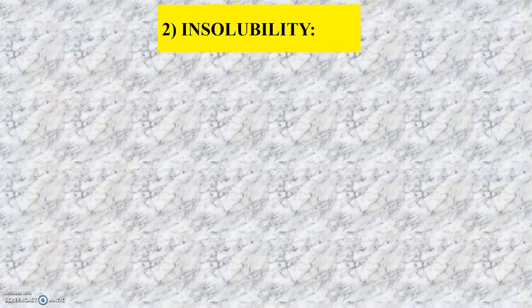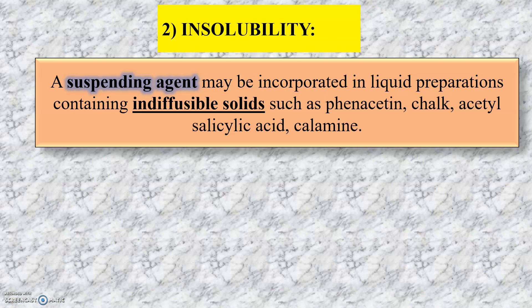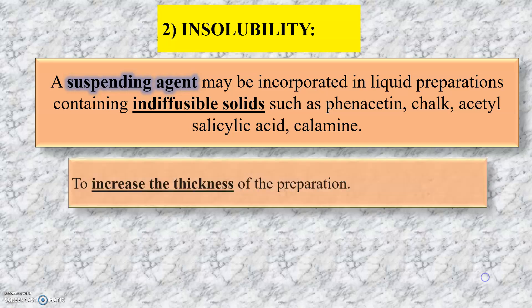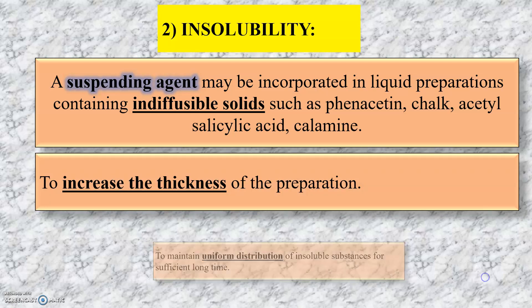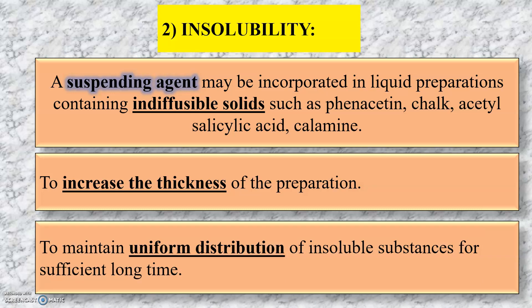The next reason is insolubility. A suspending agent may be incorporated in liquid preparations containing indiffusible solids such as phenacetin, chalk, acetylsalicylic acid, and calamine. The suspending agent is added to increase the thickness of the preparation and to maintain uniform distribution of insoluble substances for a sufficiently long time.